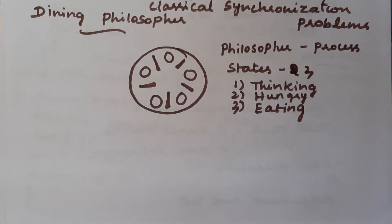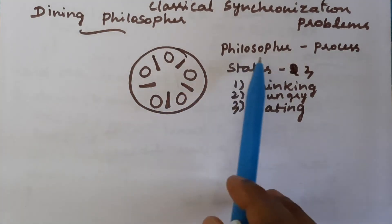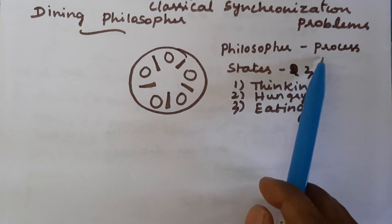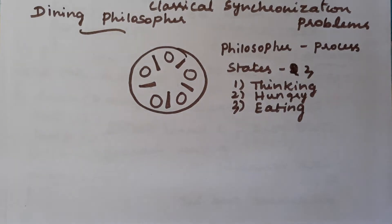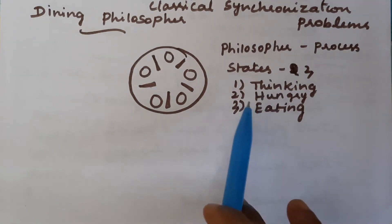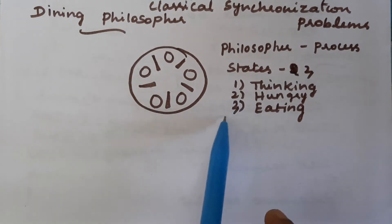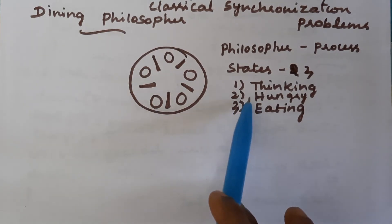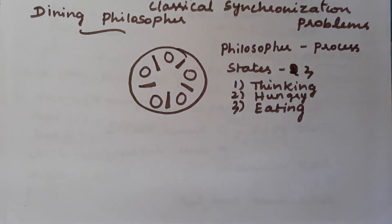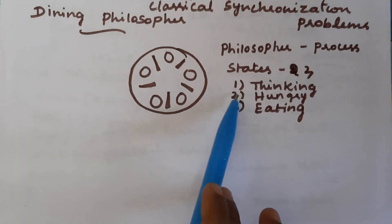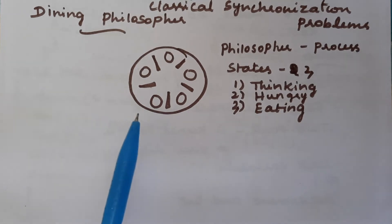We can relate this problem to processes: the number of philosophers equals the number of processes. There are two major tasks — thinking and eating. If a philosopher wants to eat, we change the state from thinking to hungry. We have included this hungry state in order to satisfy mutual exclusion.